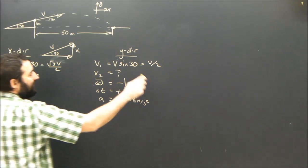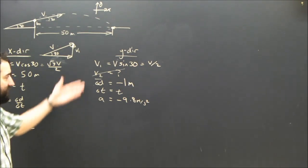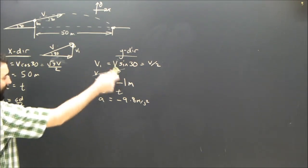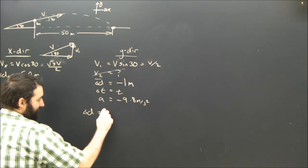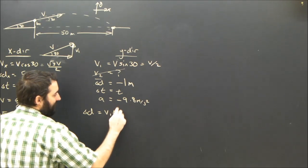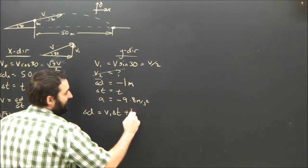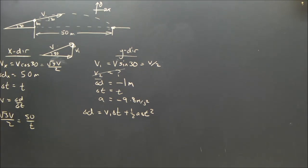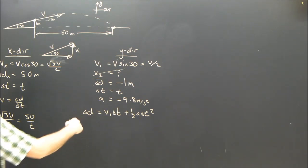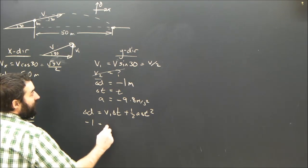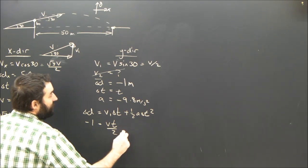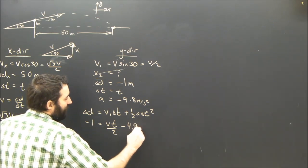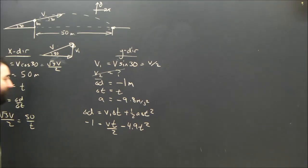And looking at this guy, we don't know anything about v2, so I've left that question mark there. I'm going to use equation number 3, which is something that happens a lot. v1t plus a half a t squared. Okay,